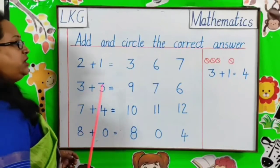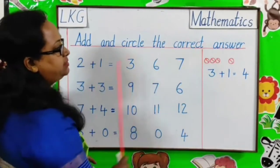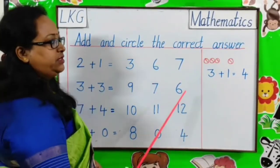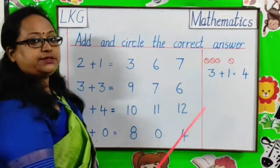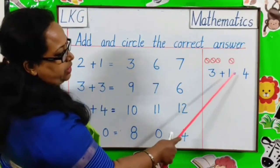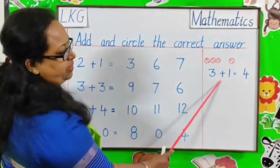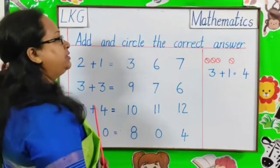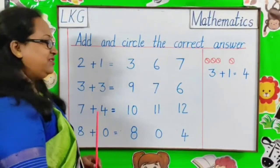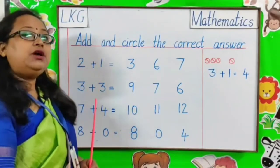Moving on to our next topic. Our next topic is, add and circle the correct answer. Children, previously you have learned addition by counting objects. Like, 3 plus 1 is equal to 1, 2, 3, 4. 3 plus 1 is equal to 4. Today, I am going to teach you all addition in a very simple way. Without counting any objects.